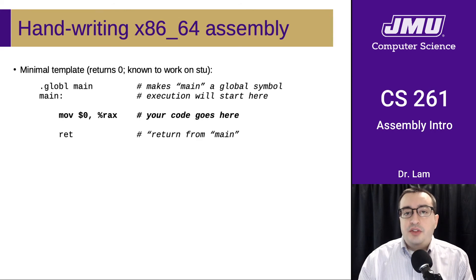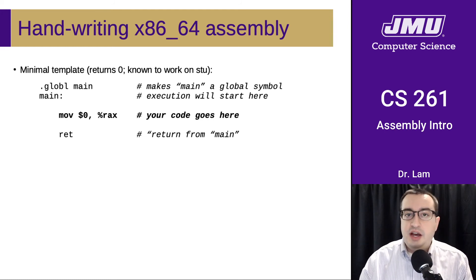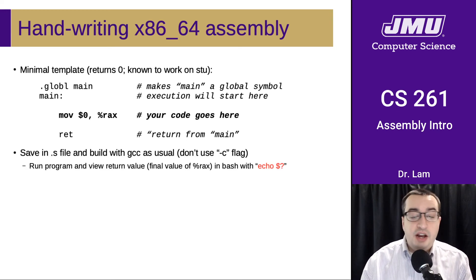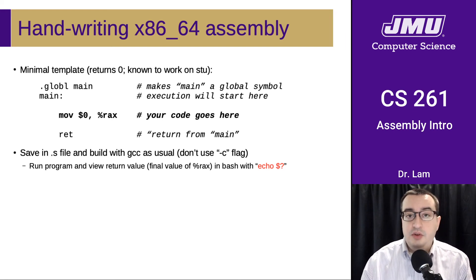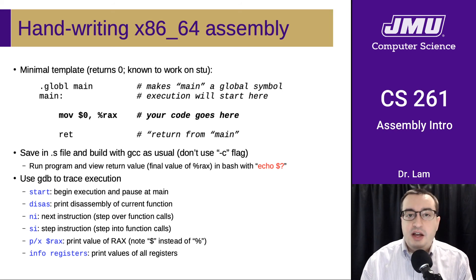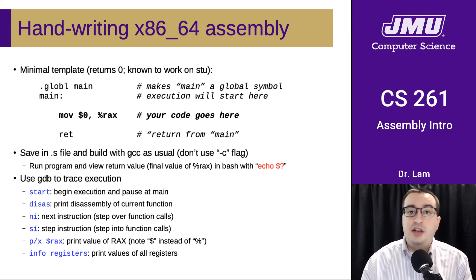At this point it's useful to be able to handwrite and test x86-64 assembly. Here is a minimal template that works on Stu. You can copy this into a file, save it as a .s file, and compile it with GCC as usual — except you don't need the -c flag. The final value of RAX is going to be the return value of the program, which in Bash you can examine using 'echo $?'. It's probably more useful to step through the program with a debugger to see how the machine is changing state, so I recommend running it in GDB.